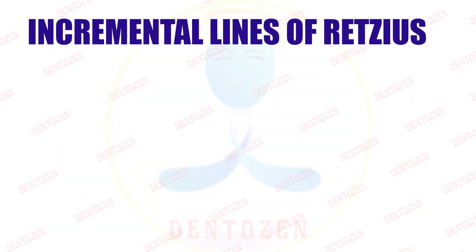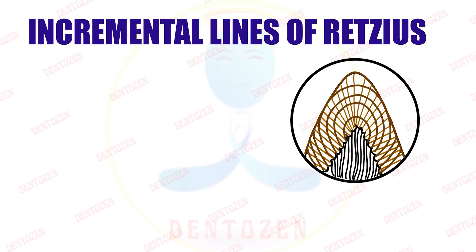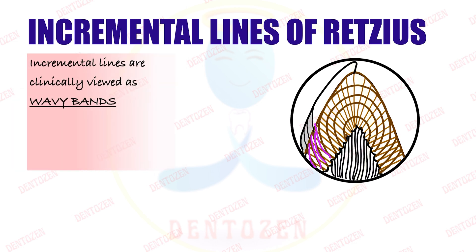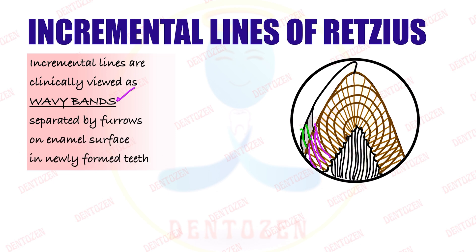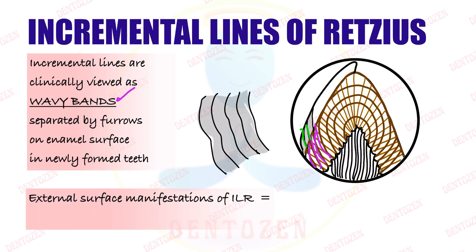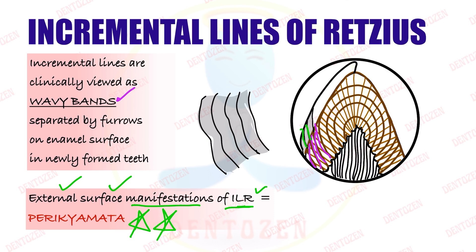Some incremental lines reach the surface of the enamel and can be seen clinically on the tooth as wavy bands, with furrows in between. These wavy bands, which are the outer surface manifestations of the incremental lines, are seen on the enamel surface of newly formed teeth and are known as perikymata.